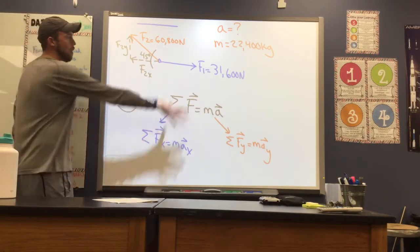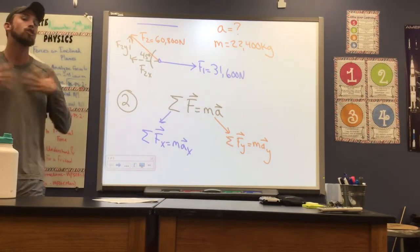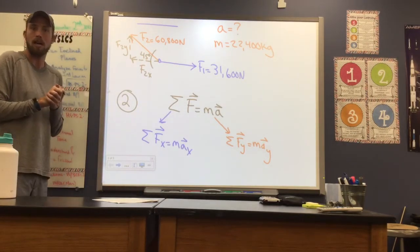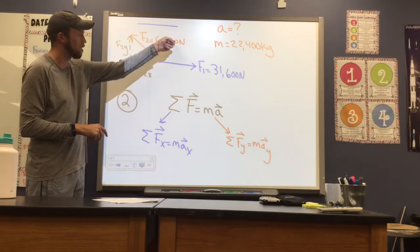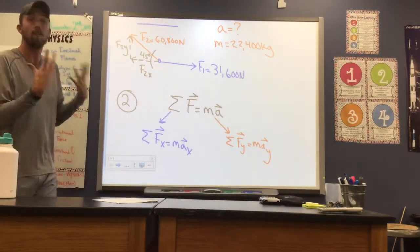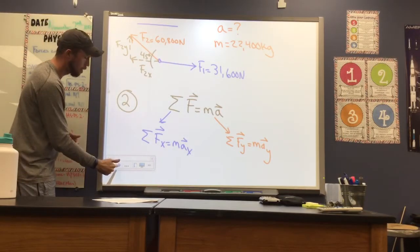So all I'm going to do now is take these forces and I'm going to put them into my equation for Newton's second law. The tricky part is that I don't know F2 in the X and F2 in the Y. So I can't take this 60,800 and plug it in because right now it doesn't really fit. So the first thing we need to do is break this force down into its components. So let's do that really quickly.